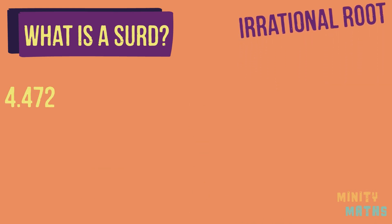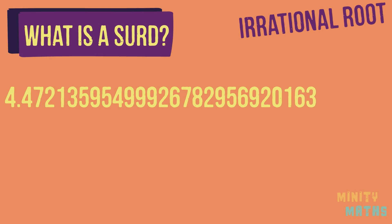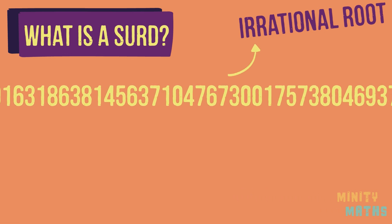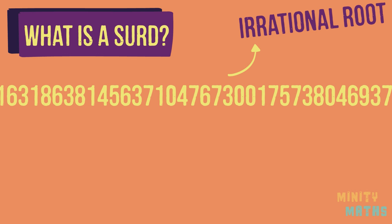When we have a decimal number which repeats forever and has no pattern — in other words we can't just put the recurring decimal dot above it — then leaving the number written as a surd makes life much easier. It lets us state the answer exactly, with no rounding and no loss of accuracy. Be careful though, as not all roots are actually surds.